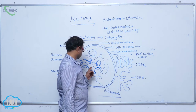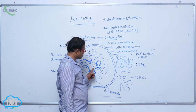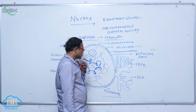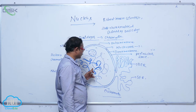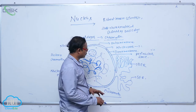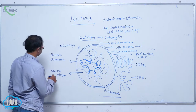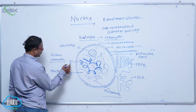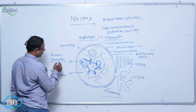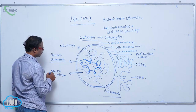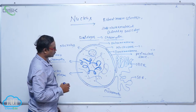Inside the nucleus, there is an elaborated network of protein filament-like structures. This elaborated network of protein-like structures is known as chromatin, and it is of two types.